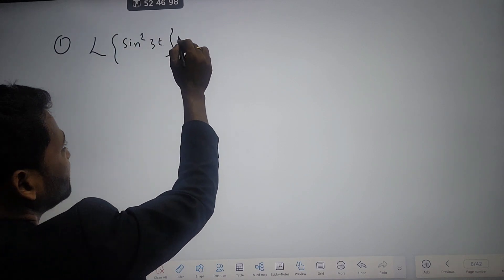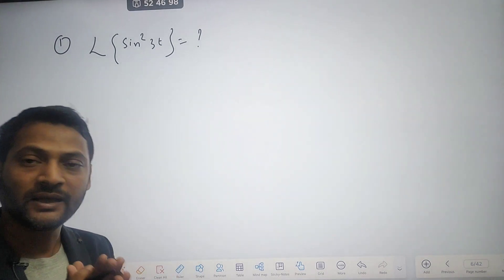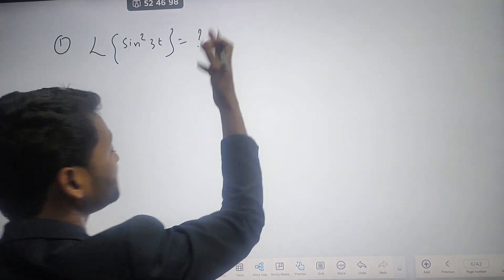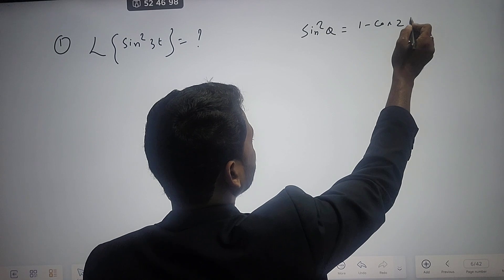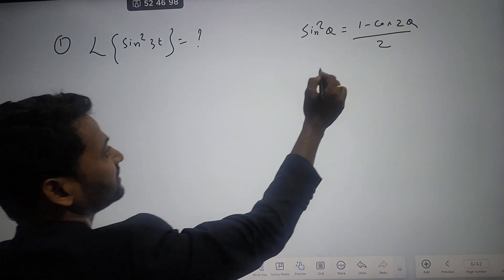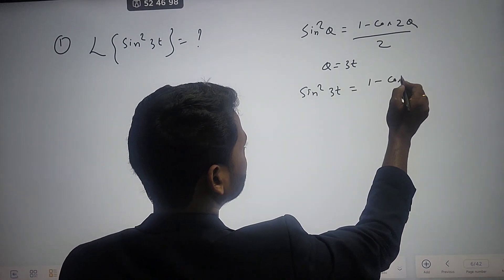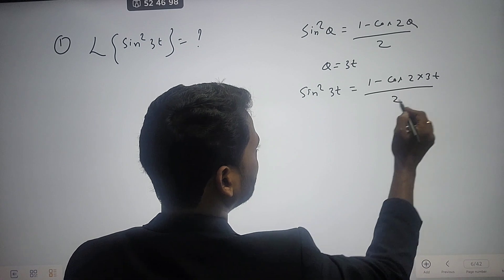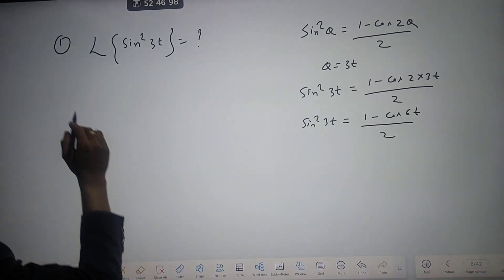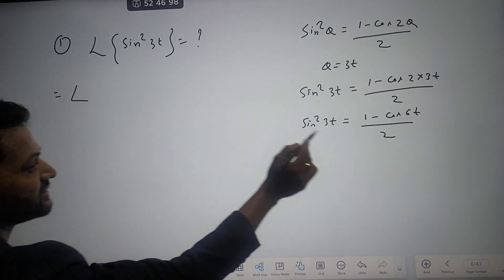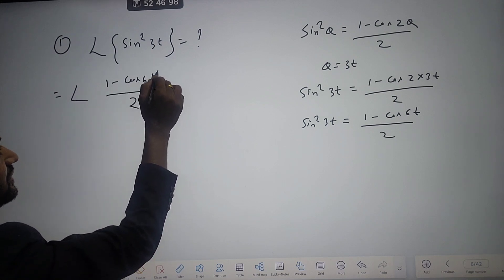If you take the Laplace of a square function like sin²θ or cos²θ, we cannot directly get the answer. Since it is a square function, we have to convert it in terms of sinθ or cosθ. Remember: sin²θ = (1 − cos2θ)/2. Here θ = 3t, so sin²(3t) = (1 − cos(6t))/2. Therefore, Laplace of sin²(3t) = Laplace of (1 − cos(6t))/2.